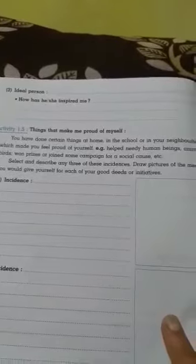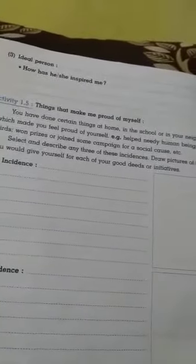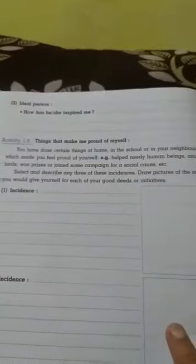Suppose you took part in the school sports and you have got some medals in the school sports, so you can draw it. Here three columns are given: this is first, second, and third. Three columns are given.